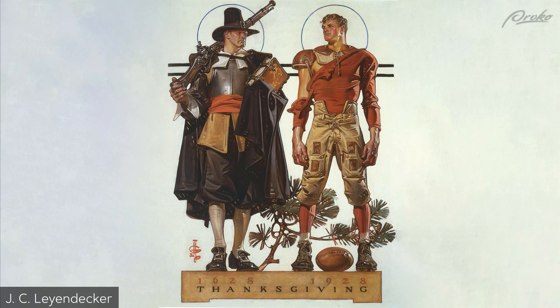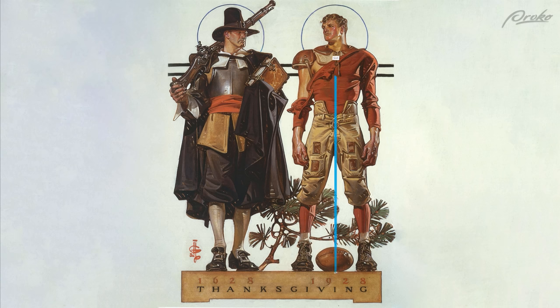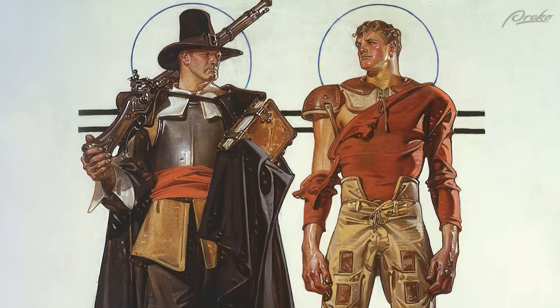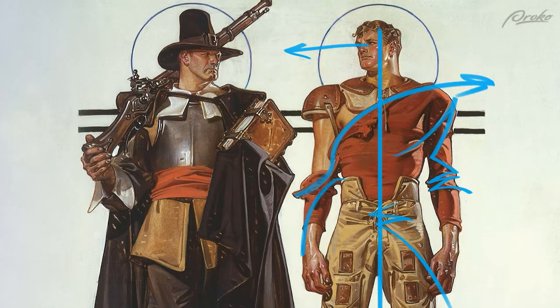A common question I get in my figure drawing class is: how do we show the gesture of somebody just standing up straight, not bending in any way, symmetrical and looking straight at us? Where's the gesture? Where's the movement? This painting by Leindecker shows a rigid pose. The gesture or the idea is stability and strength. The pose itself is not dynamic, but it still looks interesting and alive because the shapes within are dynamic.